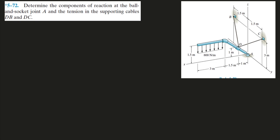Here we have this rigid body 3D equilibrium problem. We need to determine the components of the reaction at the ball and socket joint A and the tension in the supporting cables DB and DC. Let's take stock of our unknowns here. At A, this is a ball and socket joint.